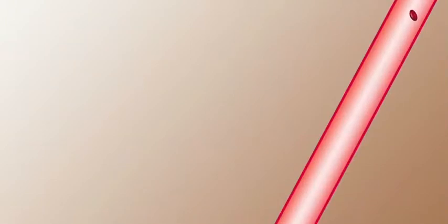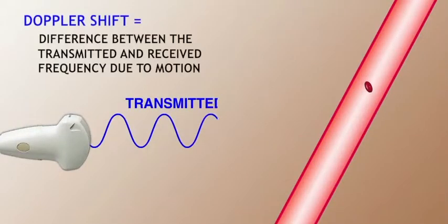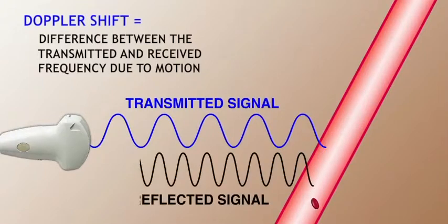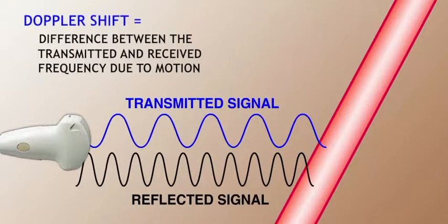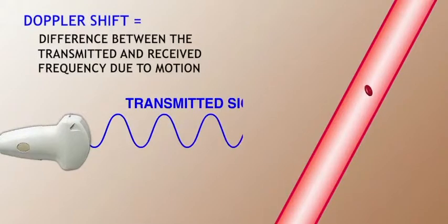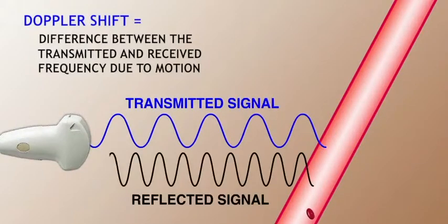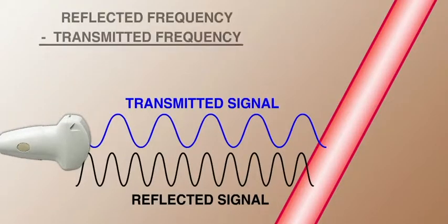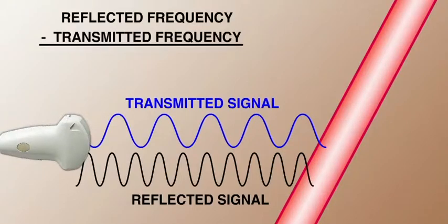The Doppler shift is the difference between the frequency that is transmitted by the transducer and the frequency that is received by the transducer. When a reflector is in motion, the frequency transmitted by the transducer — the source of sound — is different than the frequency that returns to the transducer. For a Doppler shift to occur, the reflector of the sound — in other words, the red blood cells — must be in motion. There will be no shift or change in frequencies if the reflector is stationary. If the transmitted frequency is subtracted from the reflected frequency, the difference is the Doppler shift.